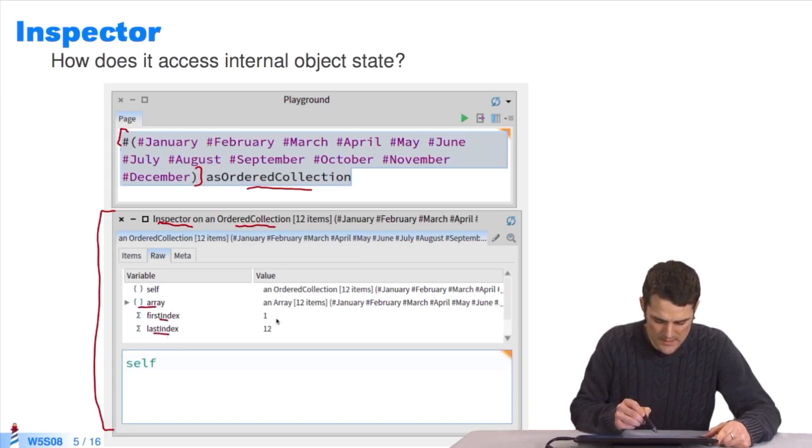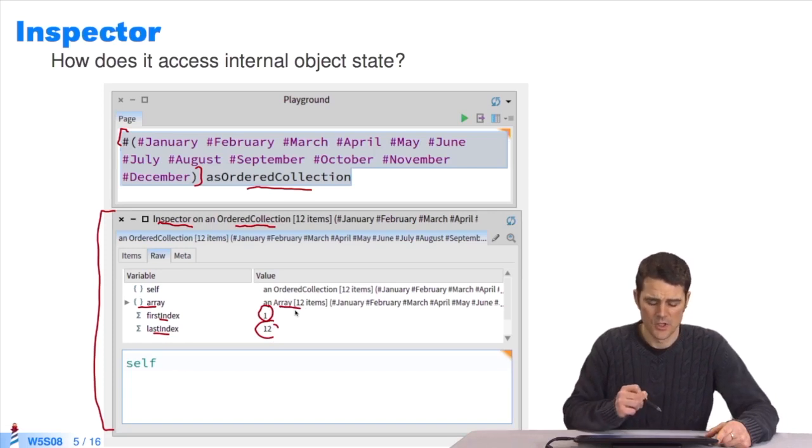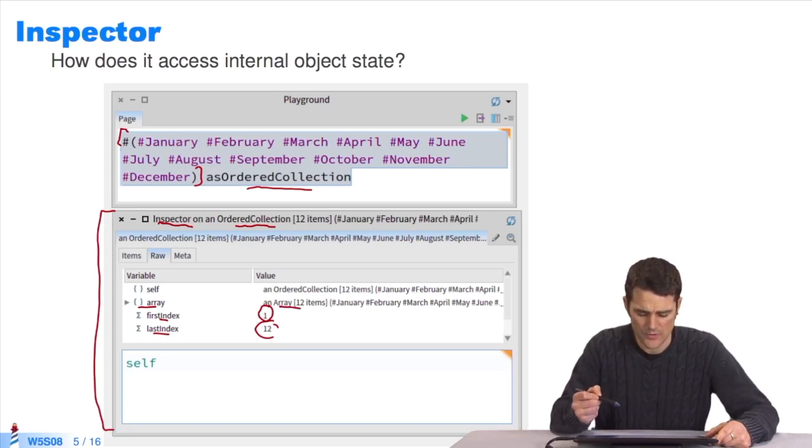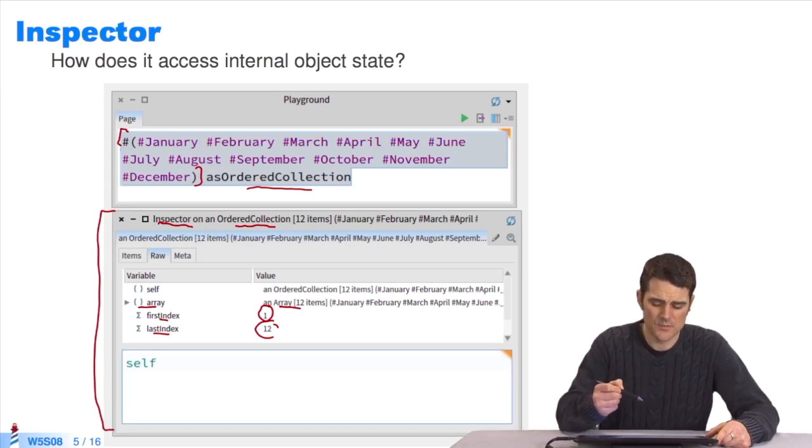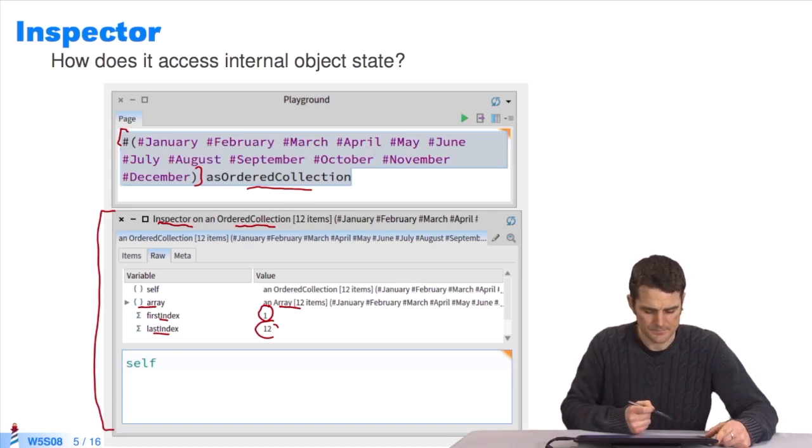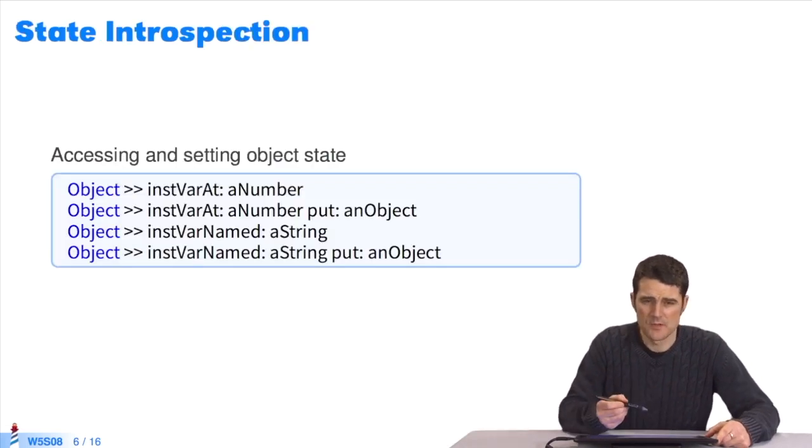First index, last index. We have the values of this object's instance variables, so 1, 12, and then an array of 12 elements. We might wonder how this inspector tool is able to look inside objects. How can it see the internal state of objects? It uses introspection methods to look inside the objects.